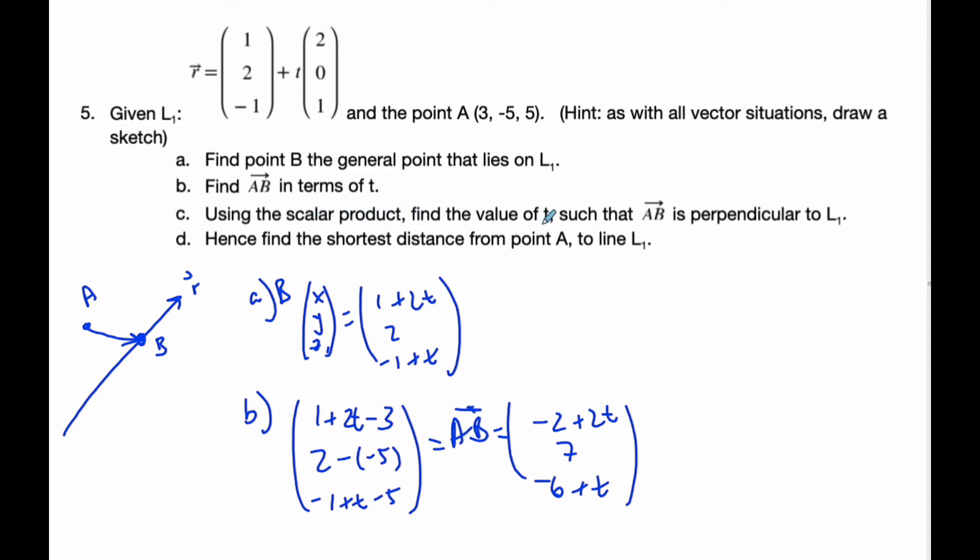Then it says use a scalar product to find a value of t such that AB is perpendicular to L1. I'm looking to find AB in such a way that it is perpendicular. That means I want AB to be perpendicular to the direction. I also know AB in this scenario, but I just want it to be perpendicular.